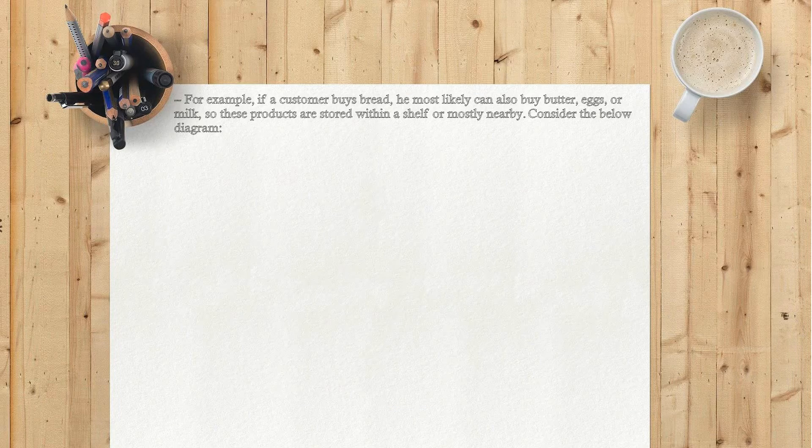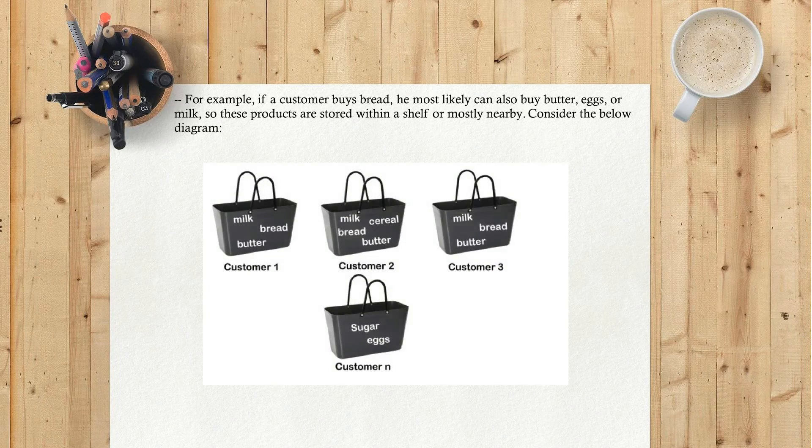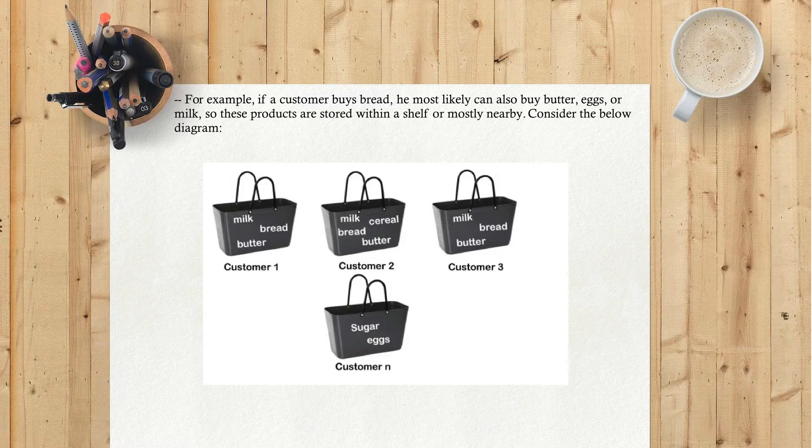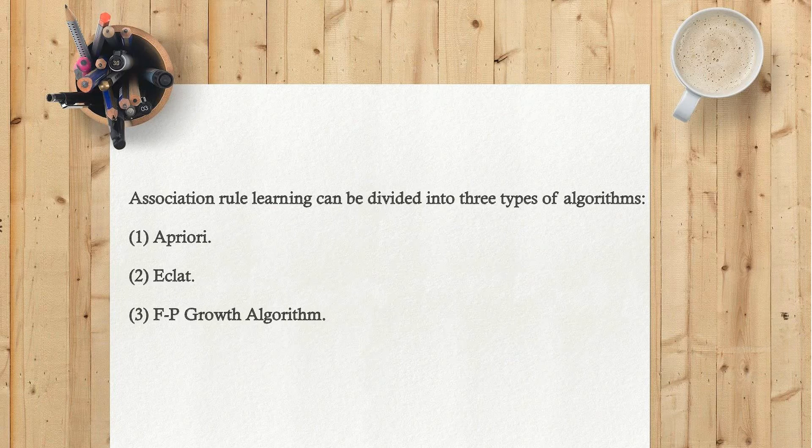For example, if a customer buys bread, he most likely can also buy butter, eggs, or milk, so these products are stored within a shelf or mostly nearby. Consider the below diagram. Association rule learning can be divided into three types of algorithms.